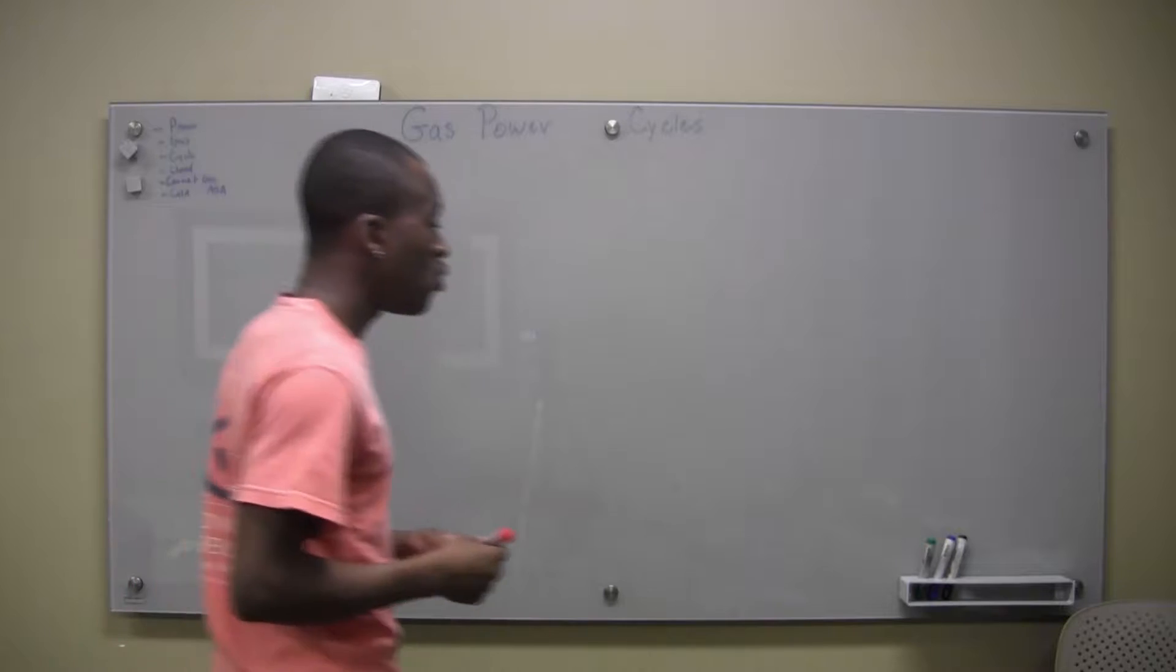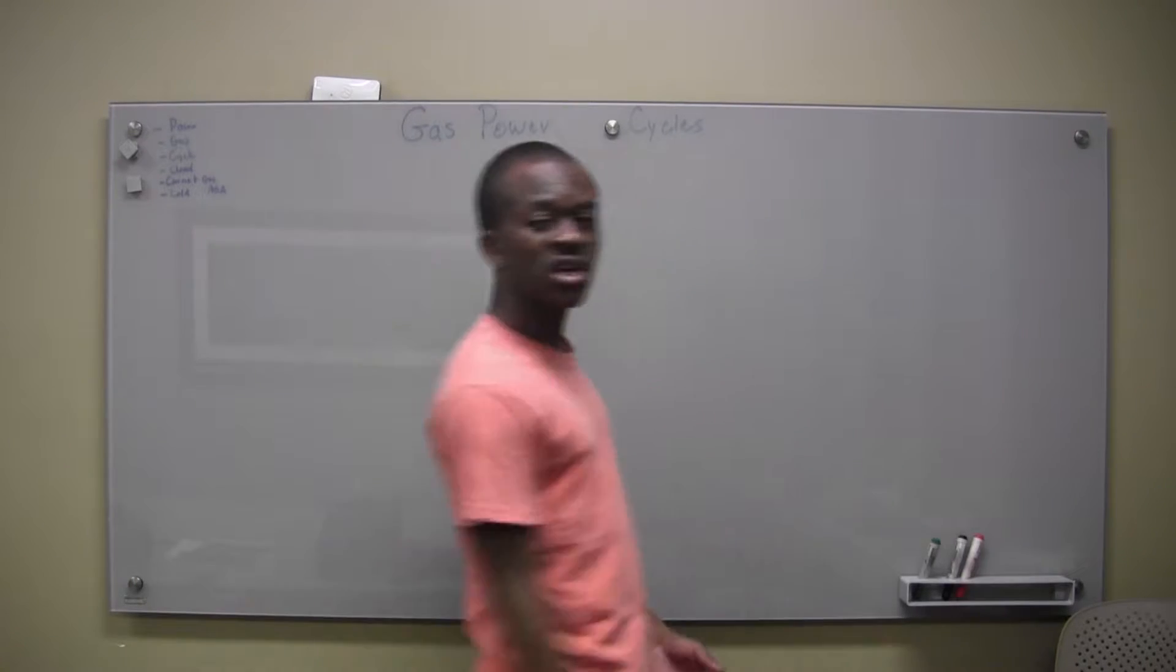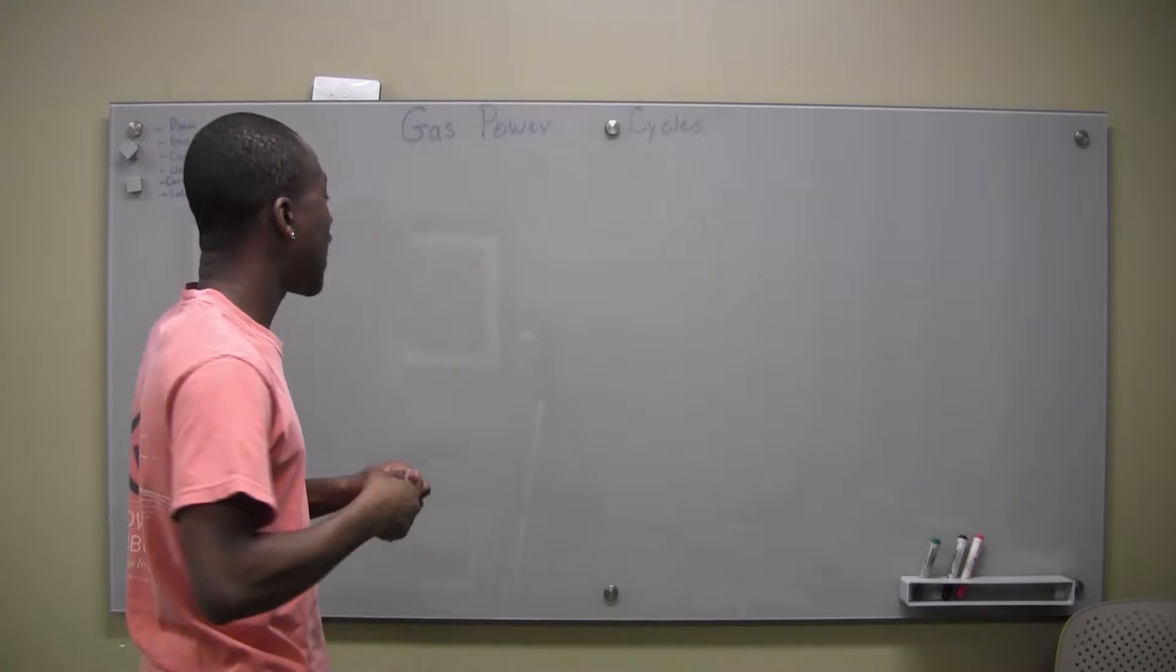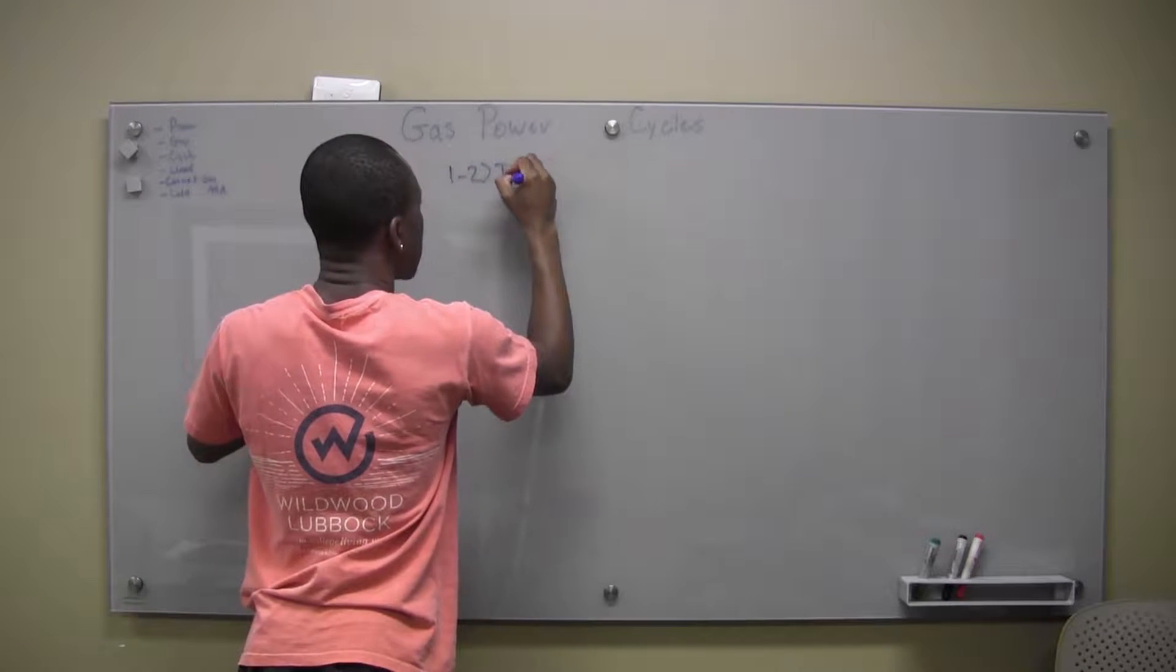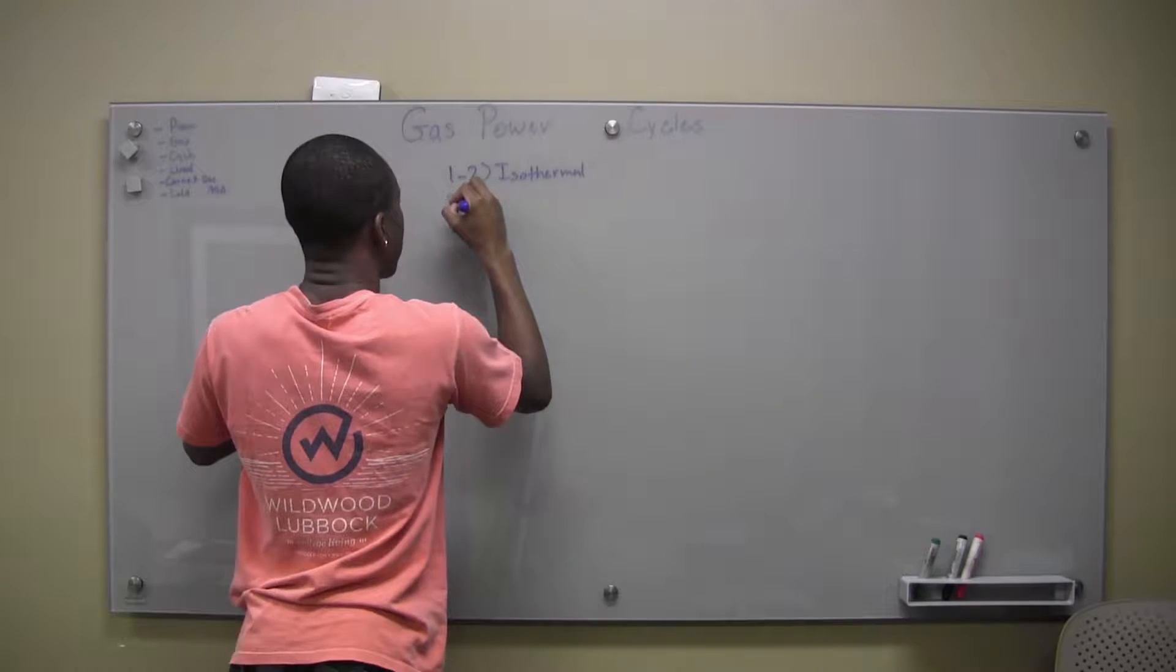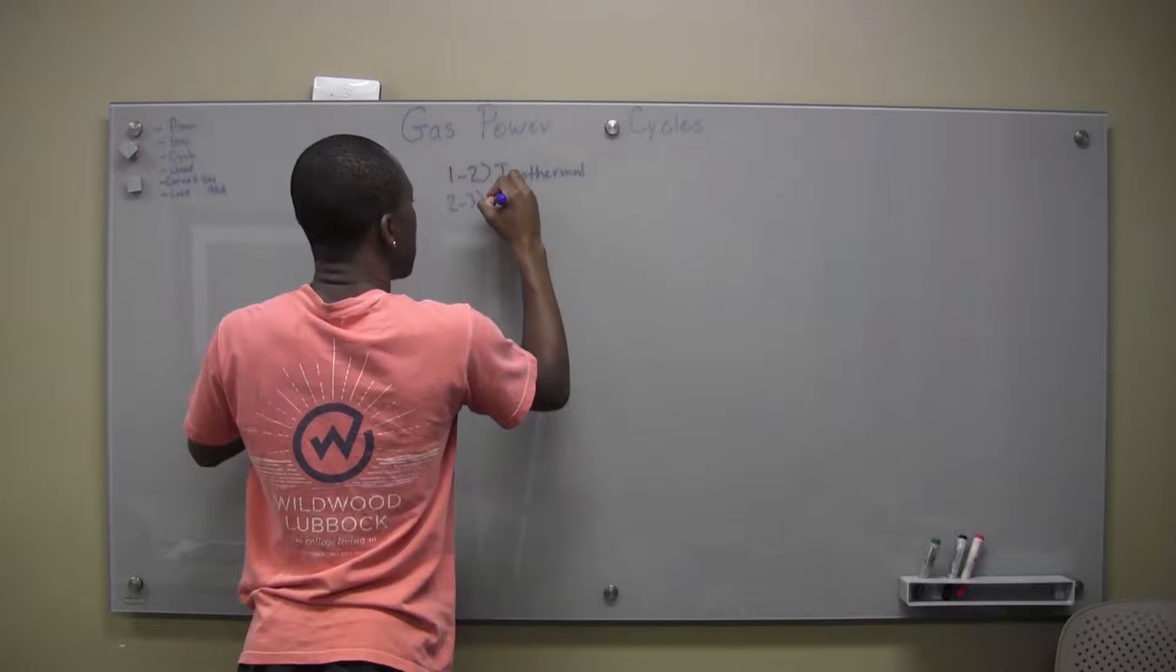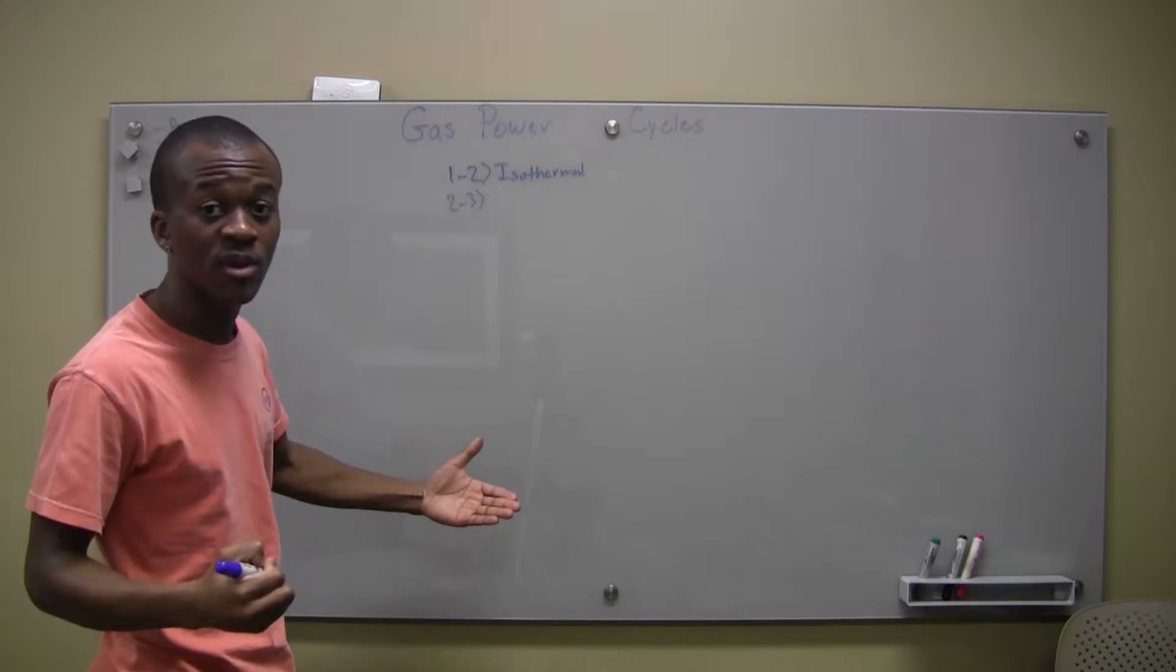Now let's talk about the Carnot gas cycle. Now we talked about the Carnot cycle before, and we know that from one to two, we're dealing with an isothermal process. And from two to three, we're dealing with an adiabatic process. And remember, everything is reversible here.